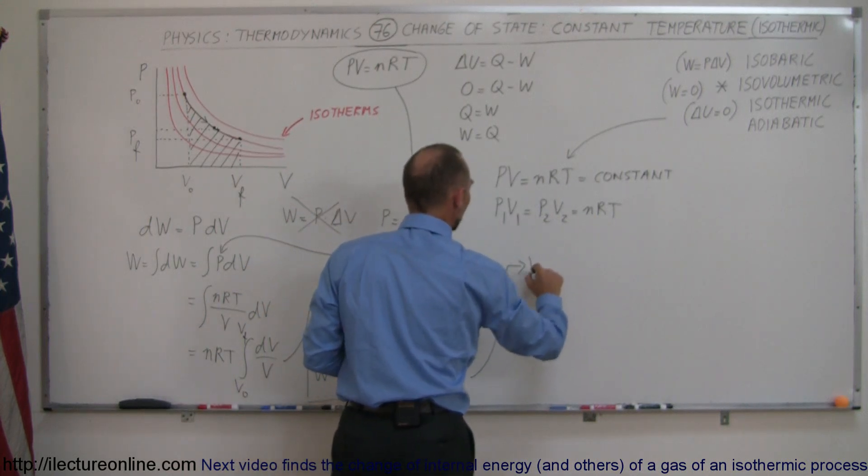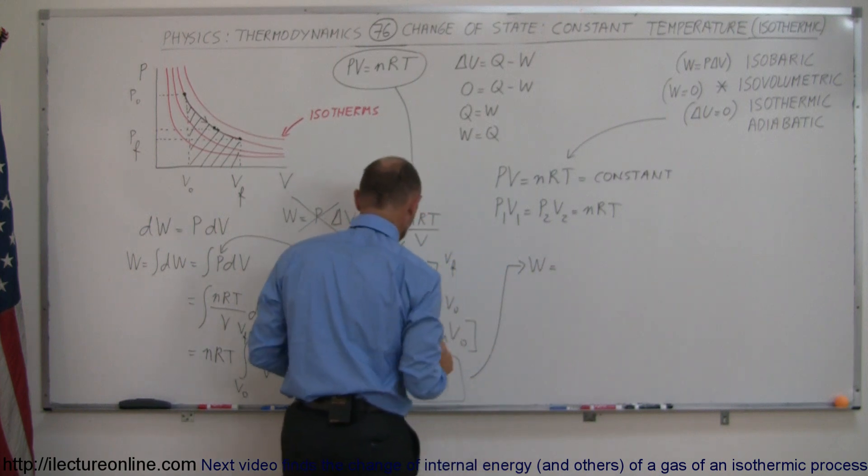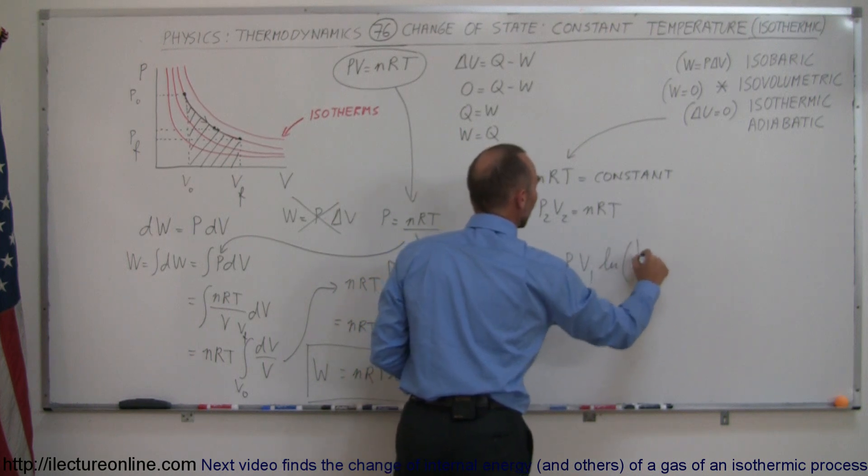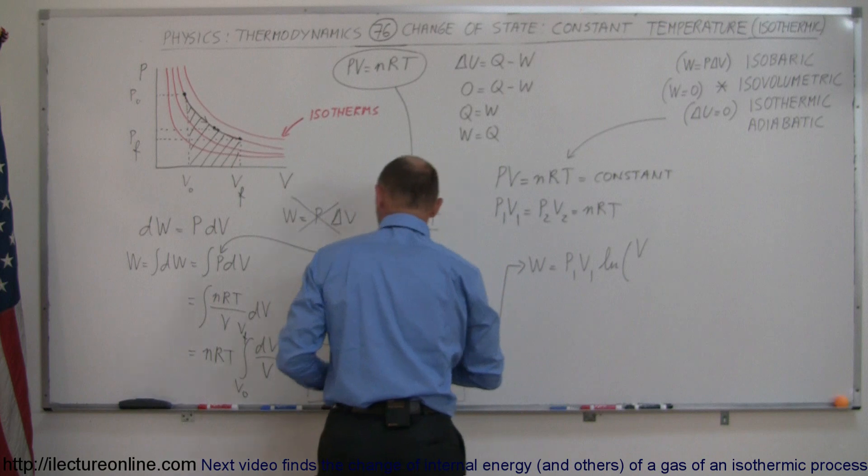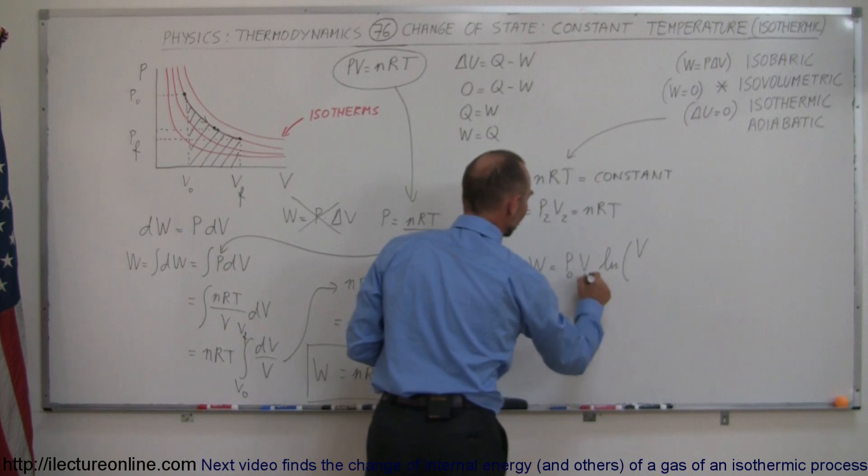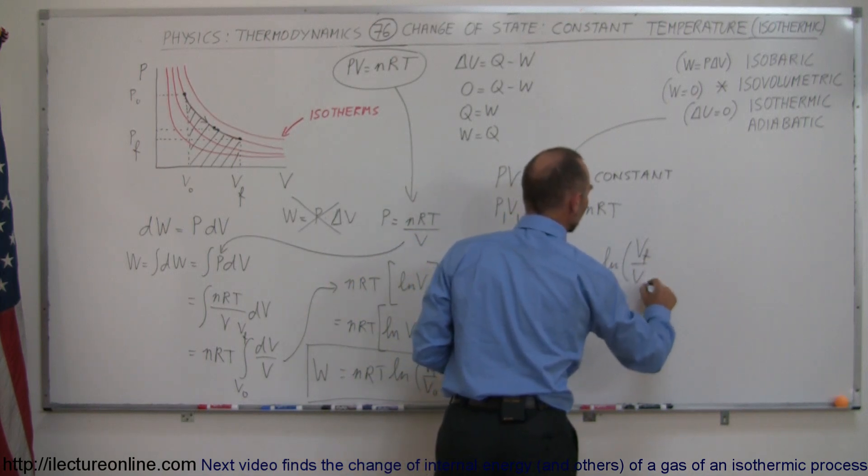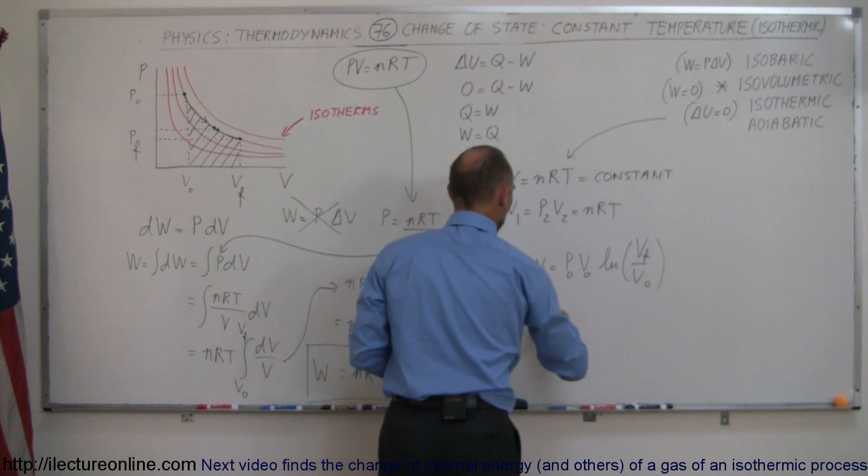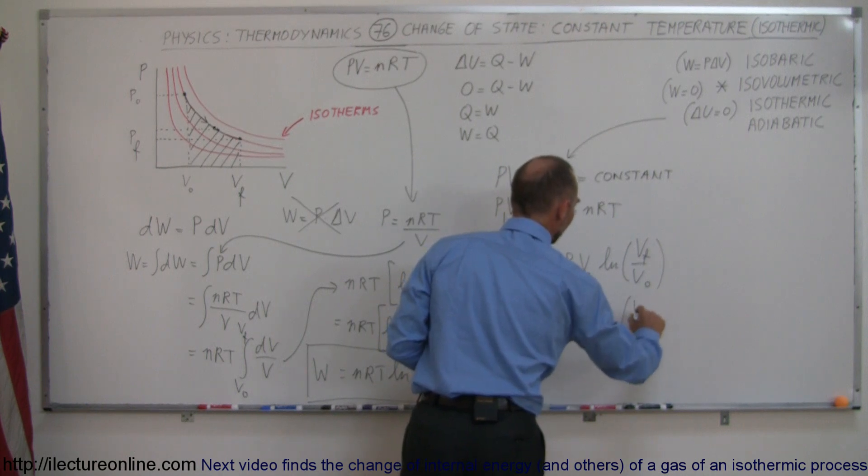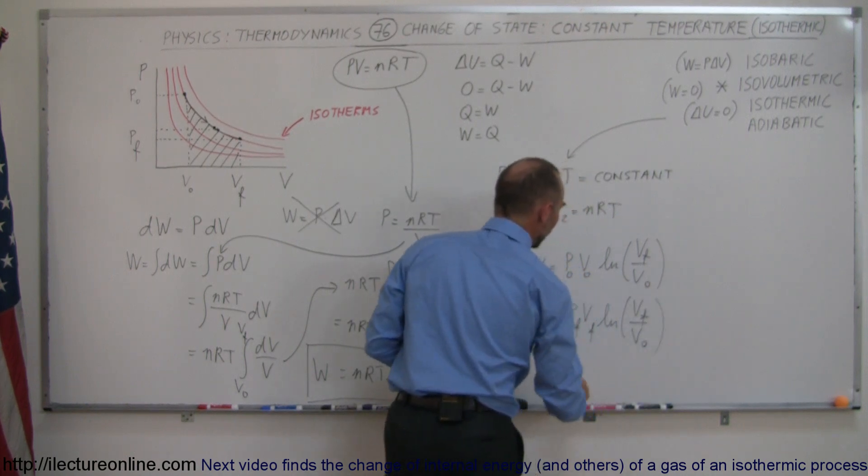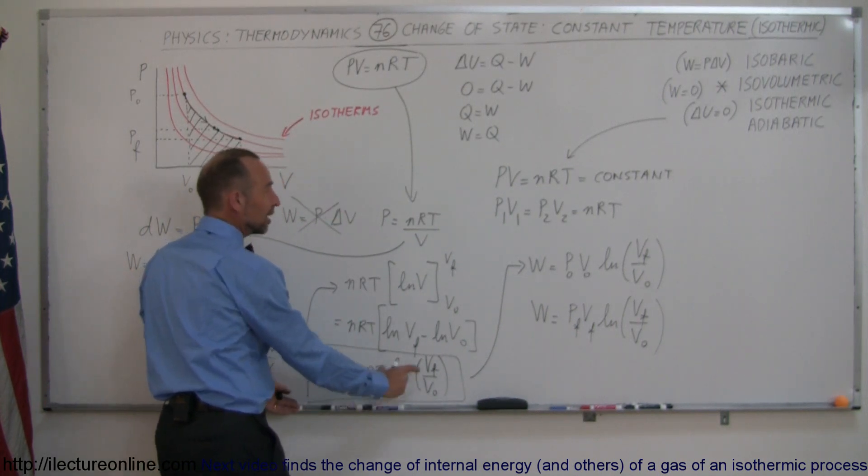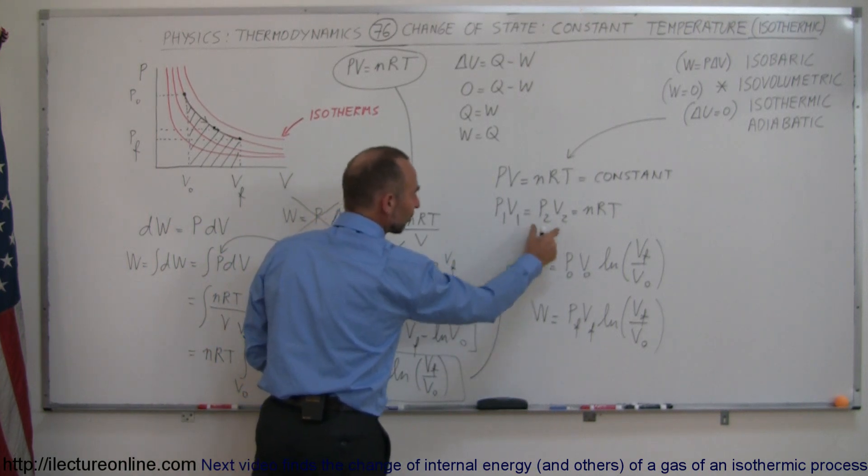So what you can also say is that the work done by an isothermic process, instead of writing nRT, we can write is equal to p initial v initial times the natural log of v final over v initial, or you can say that work done is equal to p final v final times the natural log of v final over v initial. So you don't have to memorize those per se, you just have to realize that once you have it in this form, you can simply replace nRT by p1 v1 or p2 v2 or initial and final, and you have two other forms of the same equation to find the work done in an isothermic process.